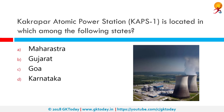Kakrapar Atomic Power Station, or KAPS-1, is located in which among the following states? KAPS-1 is a nuclear power station in India which lies in proximity to the city of Vyara in the state of Gujarat. It consists of two 220 MW pressurized water reactors with heavy water as moderator.